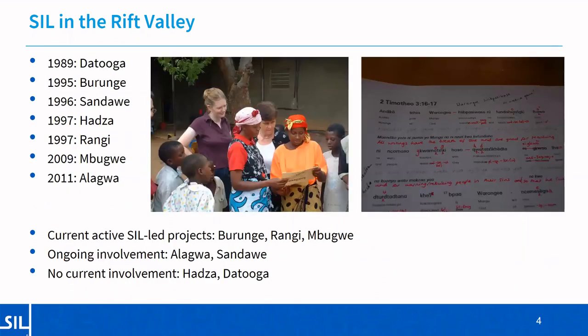SIL has been working with language communities to create practical orthographies and promote language development in the Rift Valley since 1989, when we started working with the Datoga people. We began work with six other languages in the area over the next 20 years or so. Currently we have active SIL-led projects in three languages — Burunge, Rangi and Mbugwe — with ongoing involvement in Alagwa and Sandawe, and no longer any involvement with Hadza or Datoga. Our main publications have been those on Rangi by Oliver Stegen and mine on Sandawe.